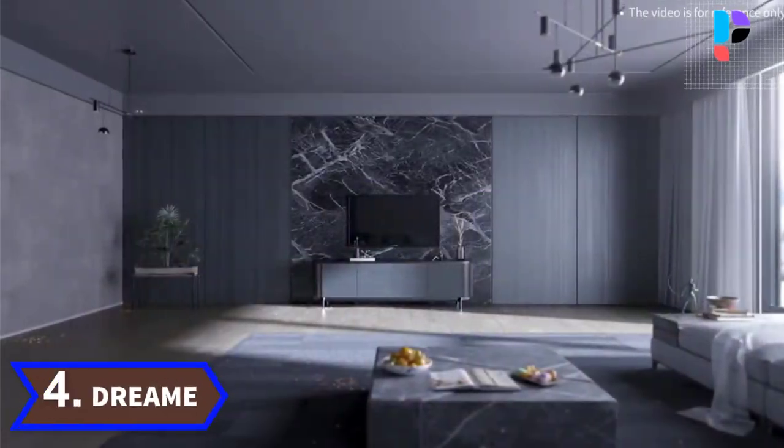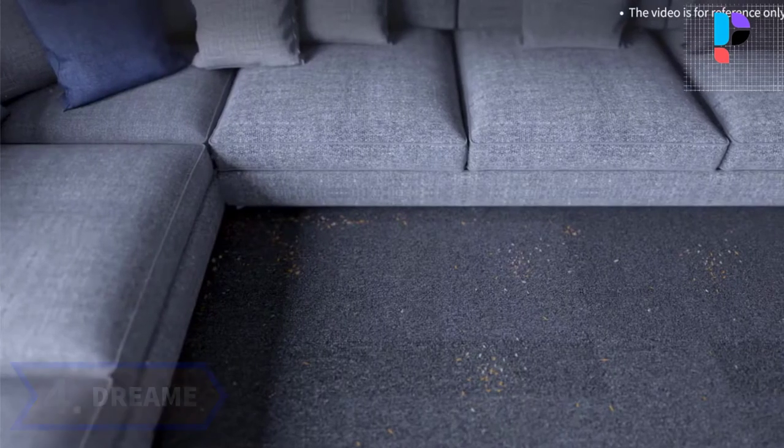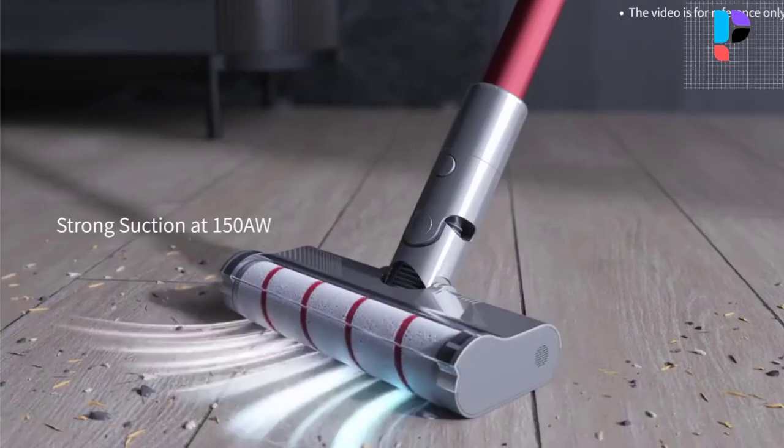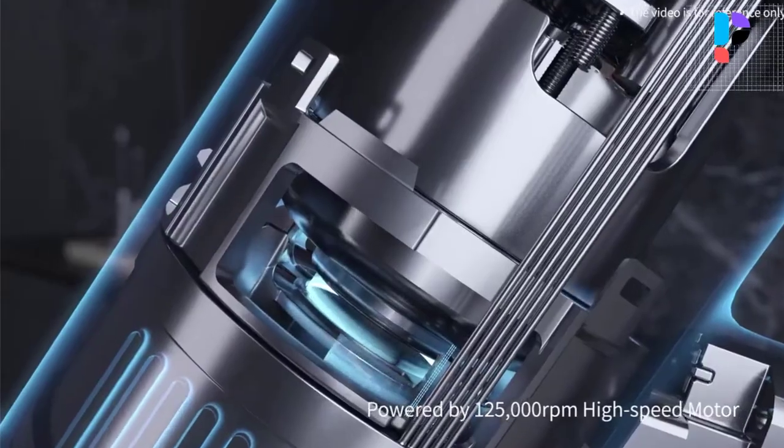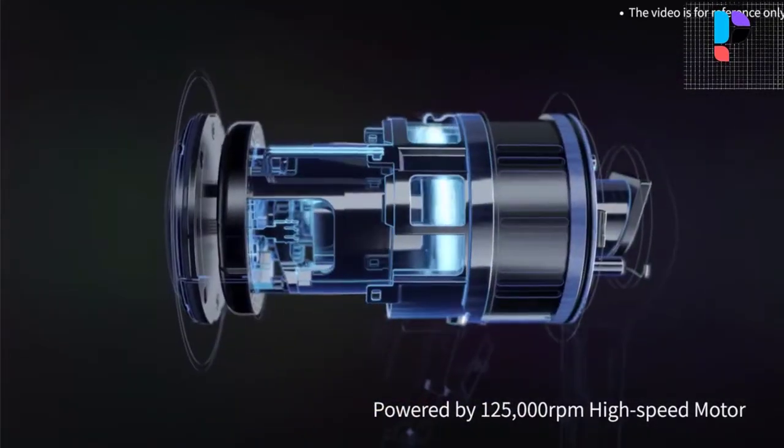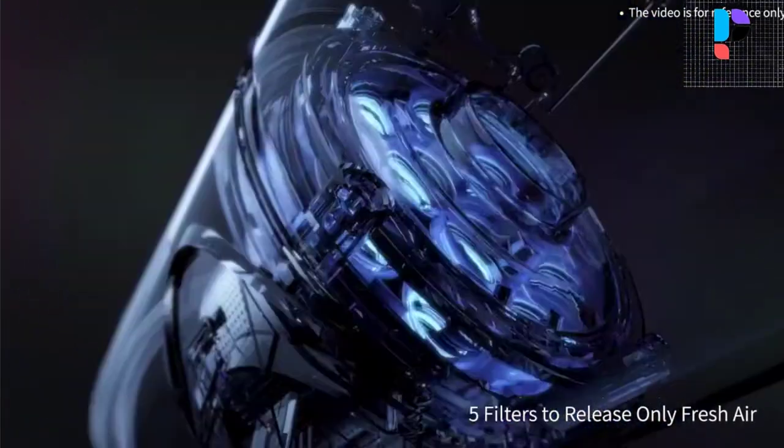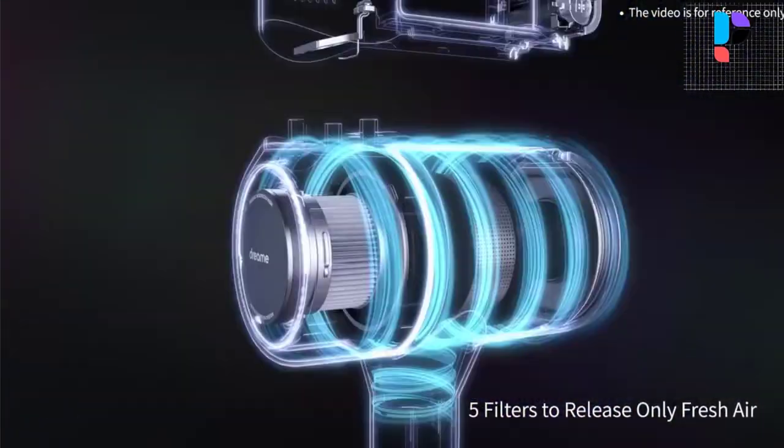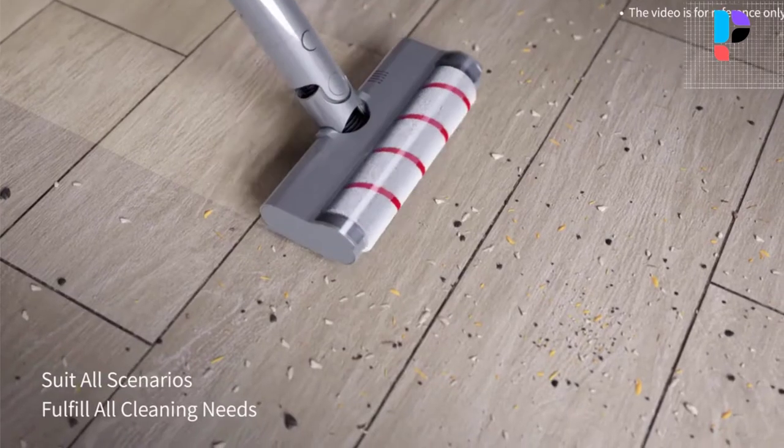Number 4, brand name Dream, model number V11. Powered by reliable Dream 125,000 rpm motor, Dream Space 4.0 high-speed motor. Dream V11 has 3,000 mAh energy storage. In standard mode, the vacuum cleaner can work effectively for 90 minutes to master large houses.